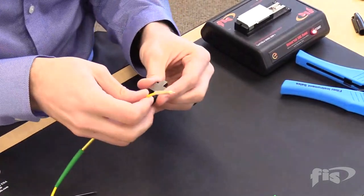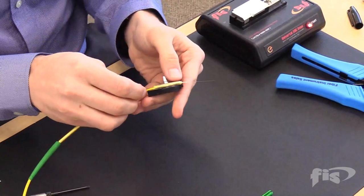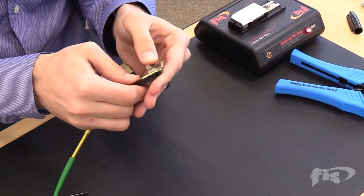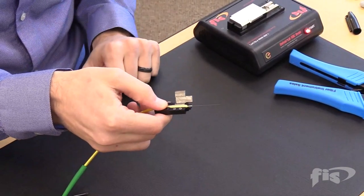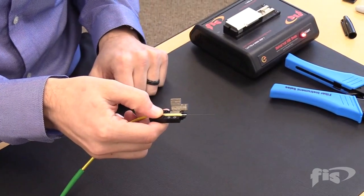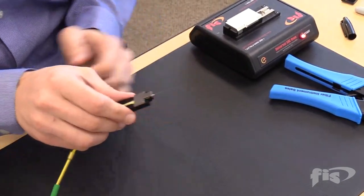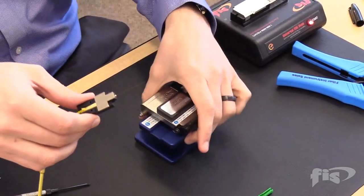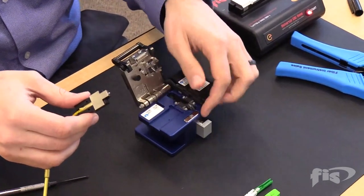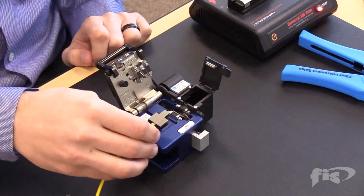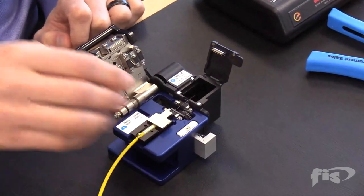Take the FIS cordage holder, open the lid, and place the fiber into the groove right up to the end of the fiber holder. Take the cleaver, open, then place the fiber holder into the cleaver, close to cleave the fiber.